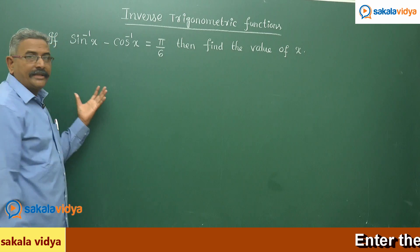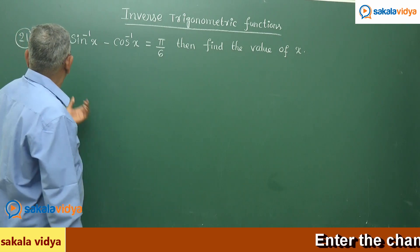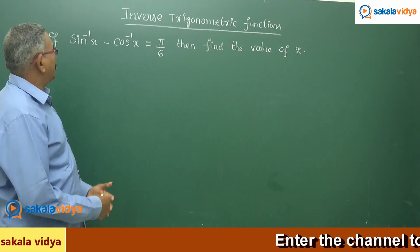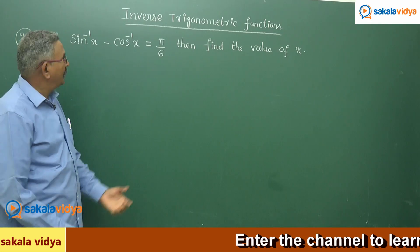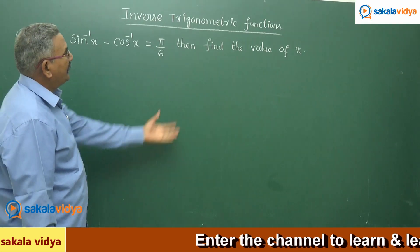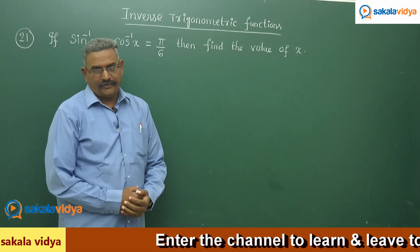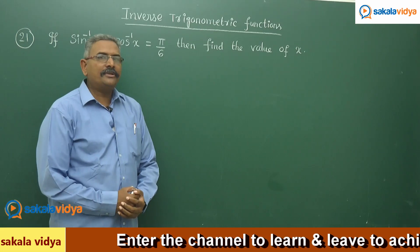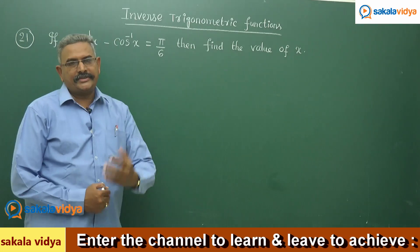Now let us move to the next problem. If sin inverse x minus cos inverse x is equal to pi by 6, then find the value of x. This problem can be done in two ways.